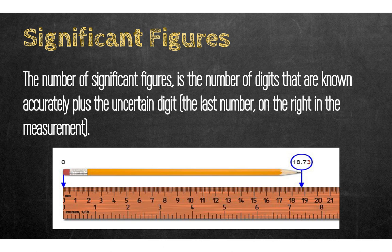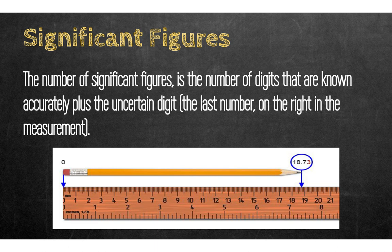Next, we'll talk about significant figures. Significant figures represent the number of digits that are known accurately plus one uncertain digit — the last number in the measurement. Significant does not mean important; it means known. When we talk about sig figs, it's how many known values from your measurement you know, plus one unknown or uncertain digit.